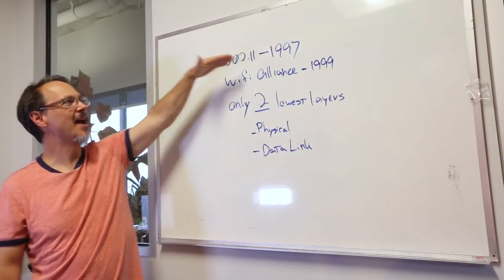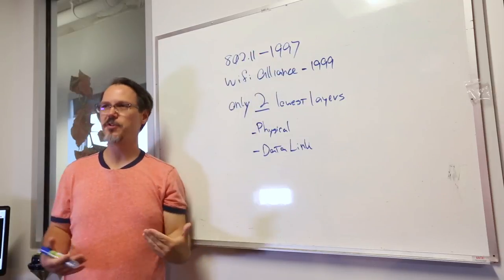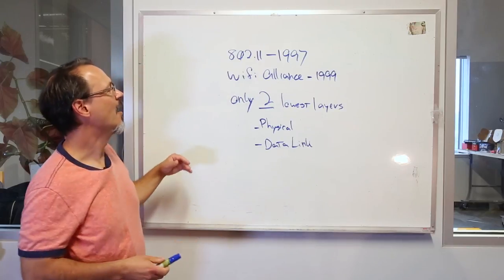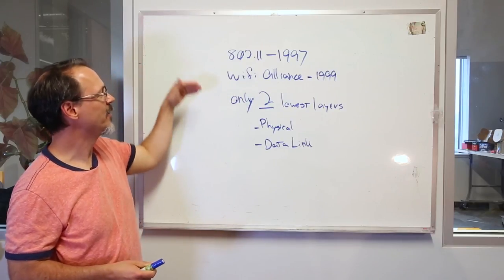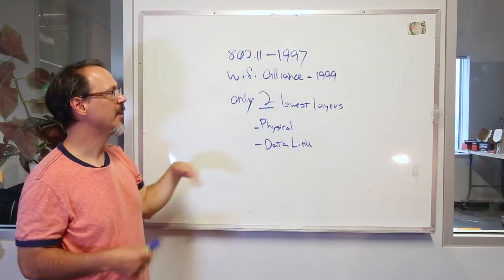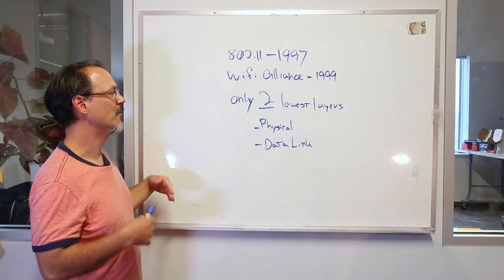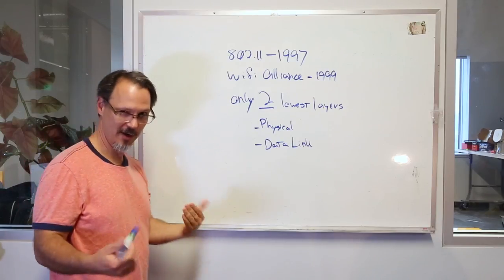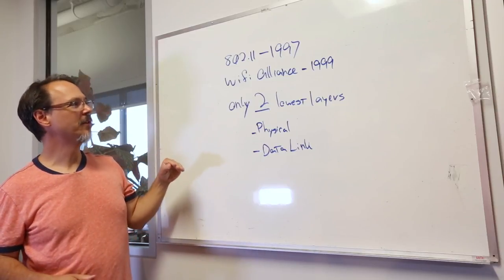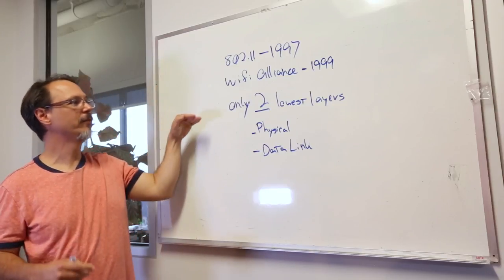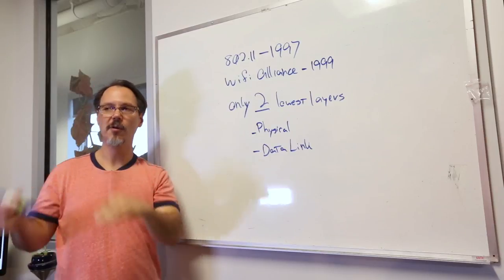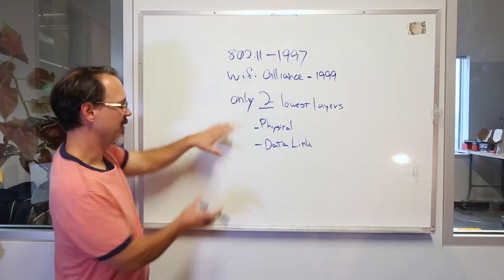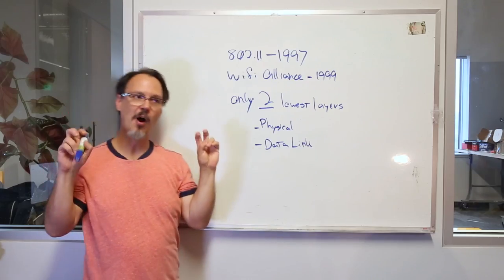802.11-1997 was the first effort by the 802 group for .11. That was in 1997. The Wi-Fi Alliance got formed in 1999 and they hold the trademark of Wi-Fi. Going back to the OSI model, the 802.11 only refers to the two lowest layers of the OSI model, those being the physical layer and the data link layer. And these together are what's referred to as the Wi-Fi stack.